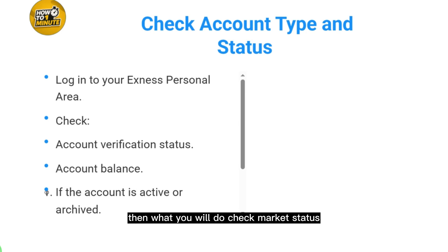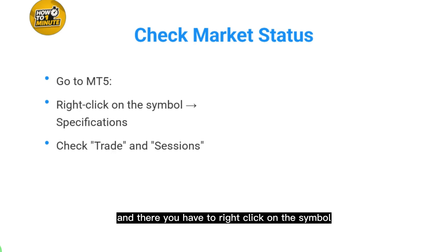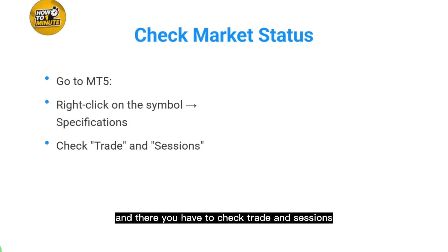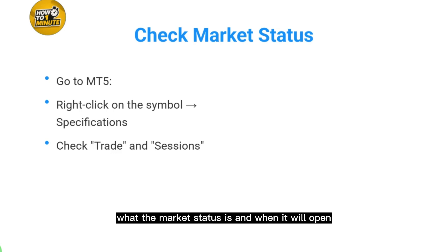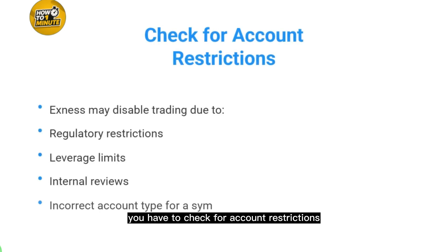If those steps check out, the next thing to do is check the market status. Go to MT5, right-click on the symbol, select Specifications, and then check Trade Sessions. This will show you the current market status and when it will open.